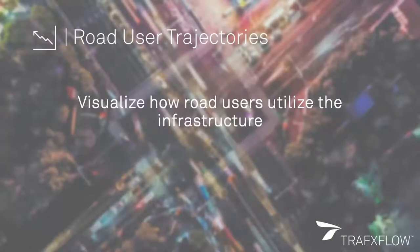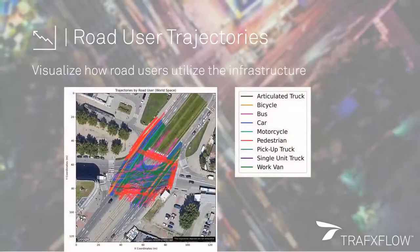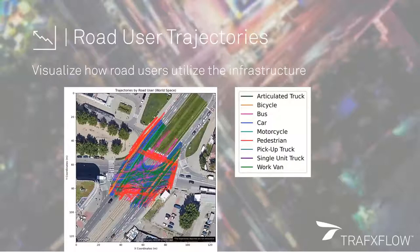Road user trajectories are also generated automatically. They provide a visual clue on how each road user is utilizing the infrastructure. Here's an example — this is the same study site shown for the speed heat map before, now from an aerial view. The trajectories are color-coded based on the road user type. Pedestrians are marked in red, and you can clearly see where they interact, where they cross the road, and where they position themselves. This image already can be very insightful for certain decision-making processes.